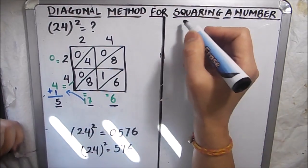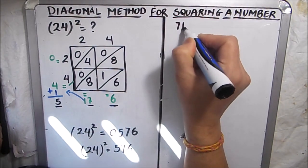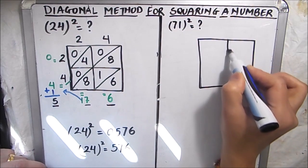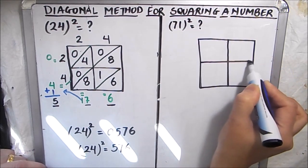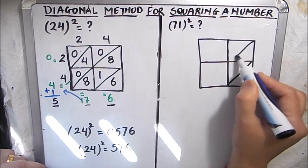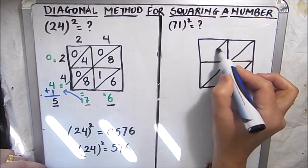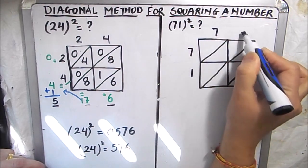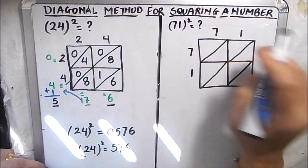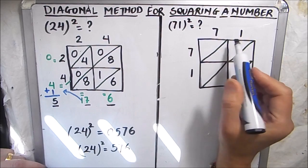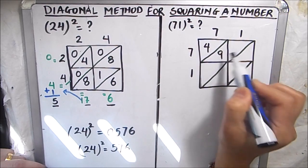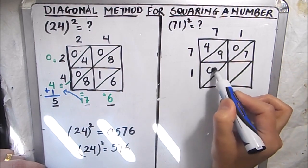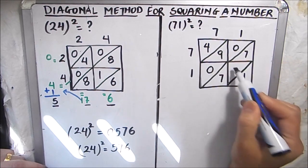Now let's take a bigger number to see a carry-over in action. Let's find the square of 71. We make a 2-by-2 square and draw the diagonals, then write 71 on top and on the left side. Multiplying: 7 times 7 is 49, so we write 49. Seven times 1 is 7, so we write 07. One times 7 is 7, so 07. One times 1 is 1, so we write 01.